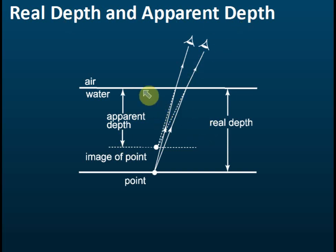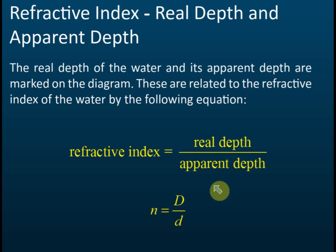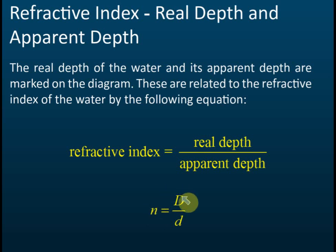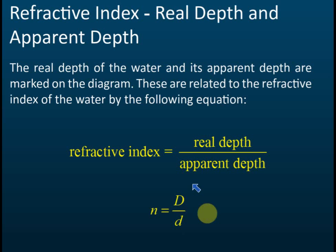So that is what we call the real depth and the apparent depth. Apparent depth is what you see and real depth is the actual depth. We can use real depth and apparent depth to find the refractive index. The formula is: refractive index n equals real depth D divided by apparent depth d.